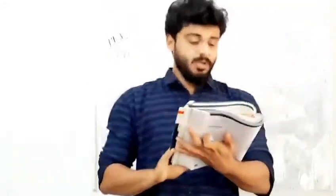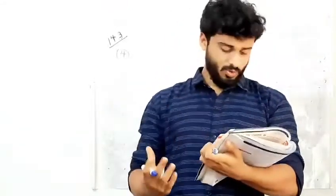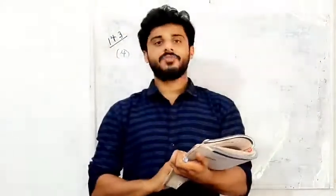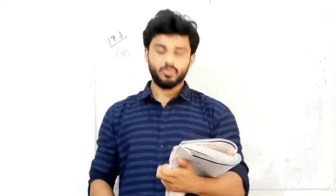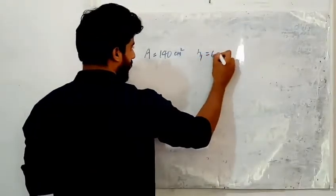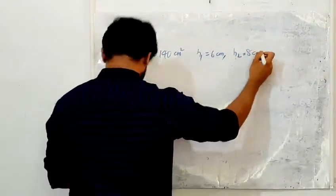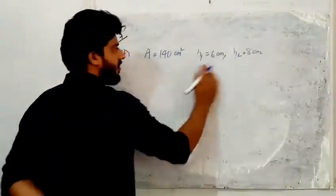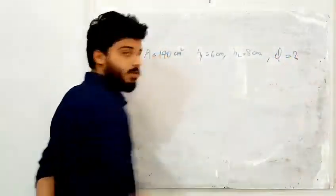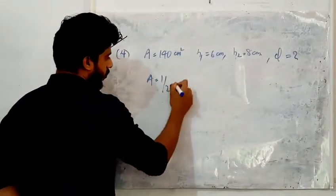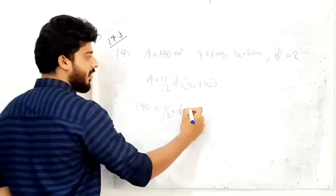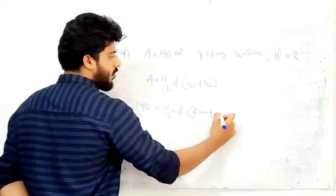Now Question 4: the area of the quadrilateral is 140 cm², and the heights of the two triangles are 6 cm and 8 cm, so A = 140, h1 = 6 cm, h2 = 8 cm. We need to find the length of the corresponding diagonal d. Using A = ½ × d × (h1 + h2), substituting 140 = ½ × d × (6 + 8).